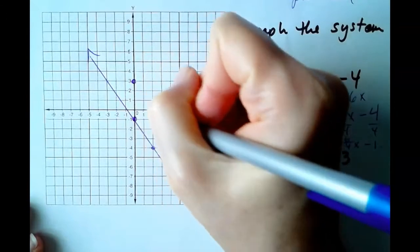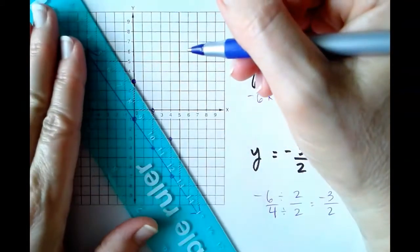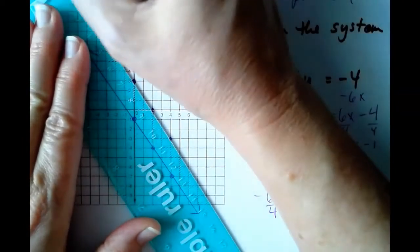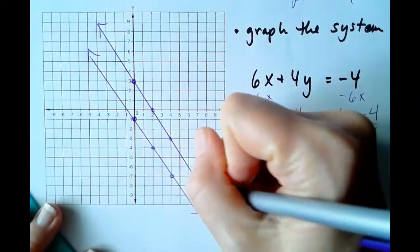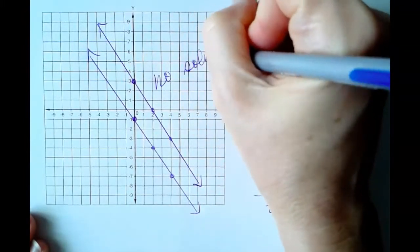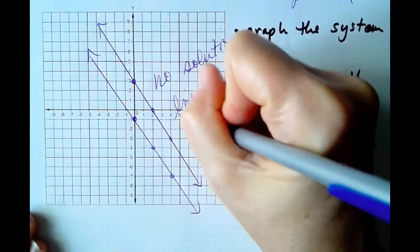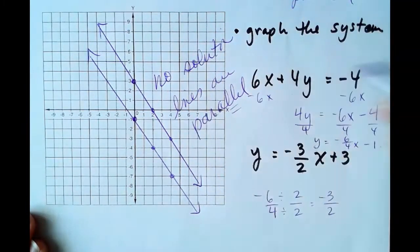1, 2, 3, over 2, 1, 2, 3, over 2. So once again, what's the solution to this system? Well, there is no solution to this system. So no solution, the lines are parallel. Parallel has two L's in the middle. Think of those two L's as the parallel lines.